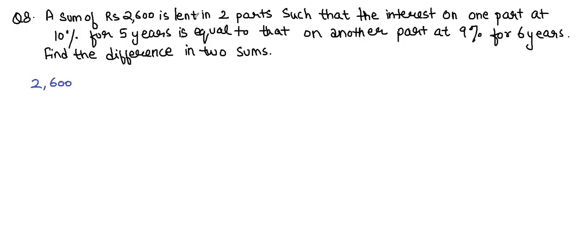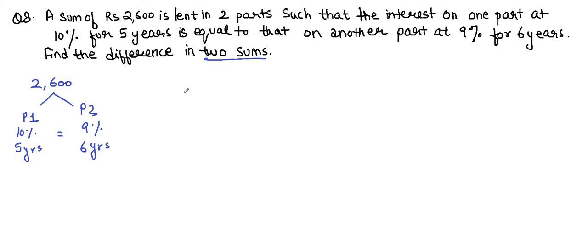Question number eight: a sum of rupees 2600 is lent in two parts such that the simple interest on part one at 10% for 5 years equals the simple interest on part two at 9% for 6 years. We have to find the difference between the two sums. Applying the SI formula: P1 × 10/100 × 5 = P2 × 9/100 × 6.